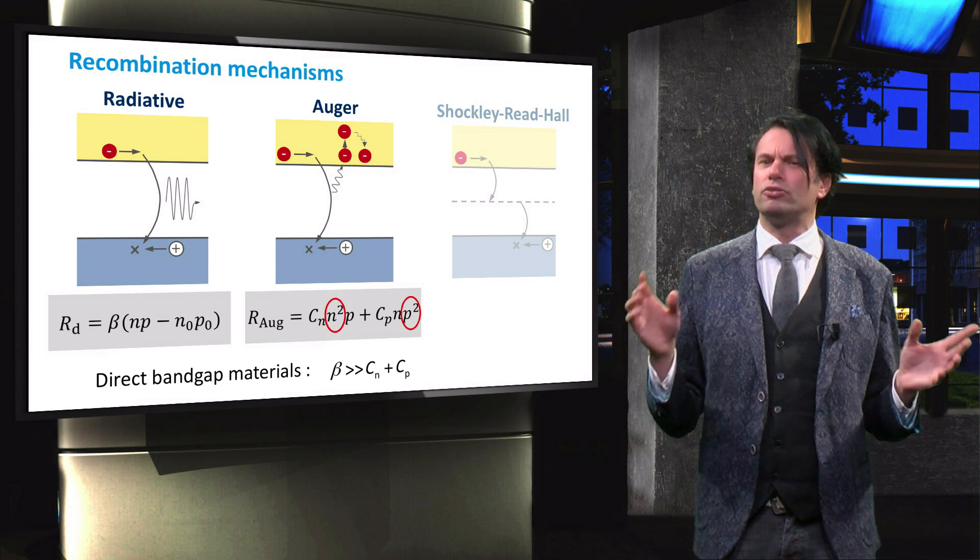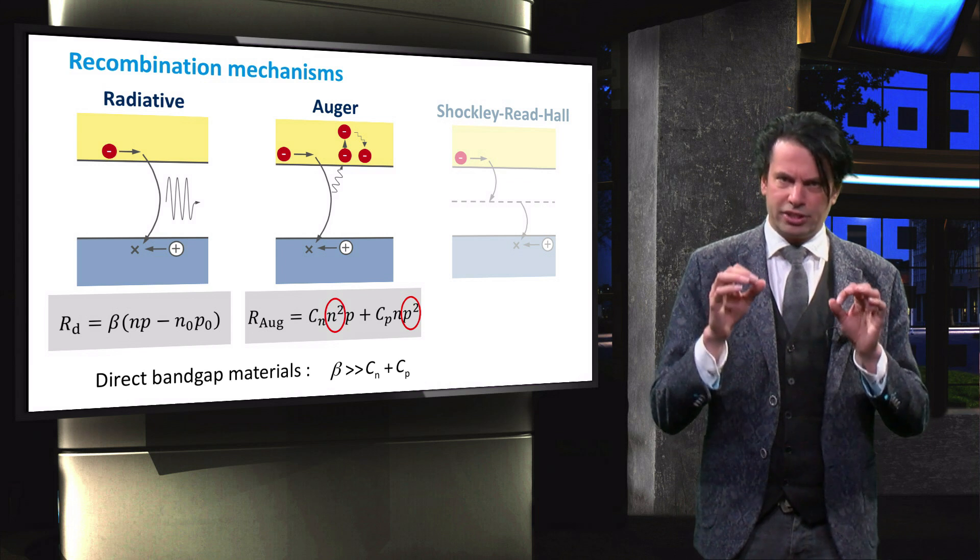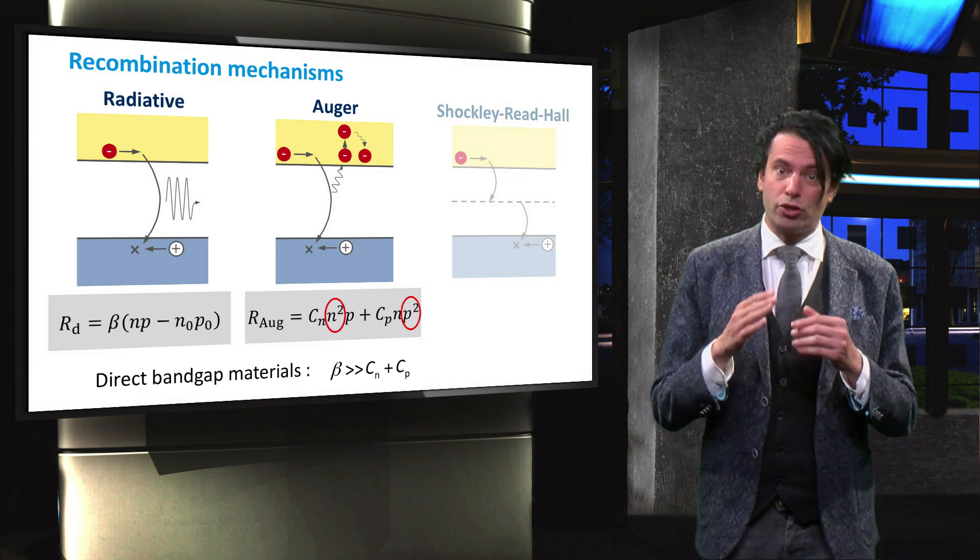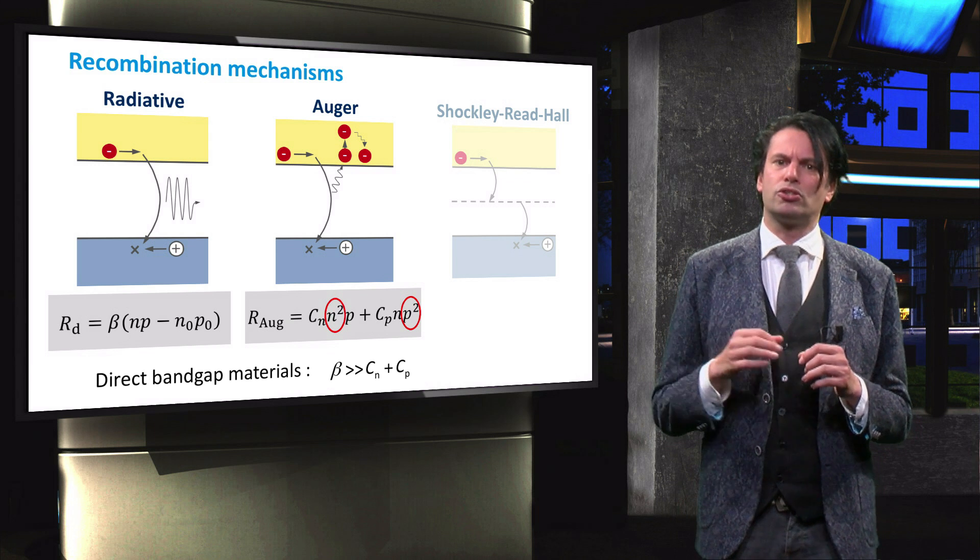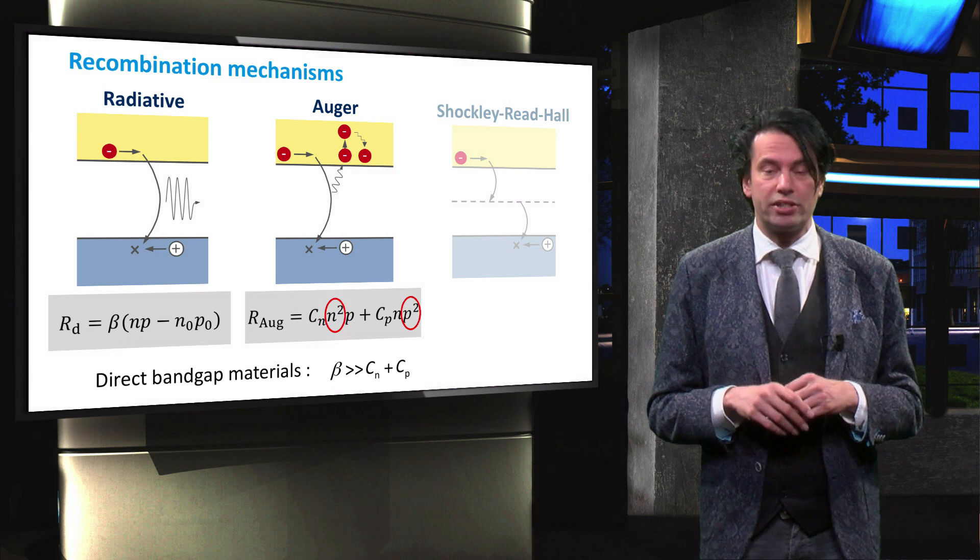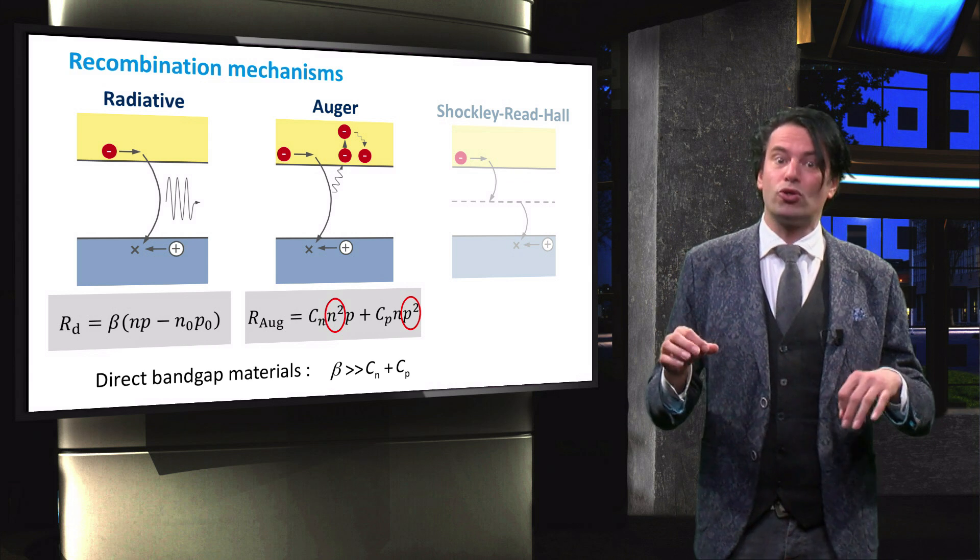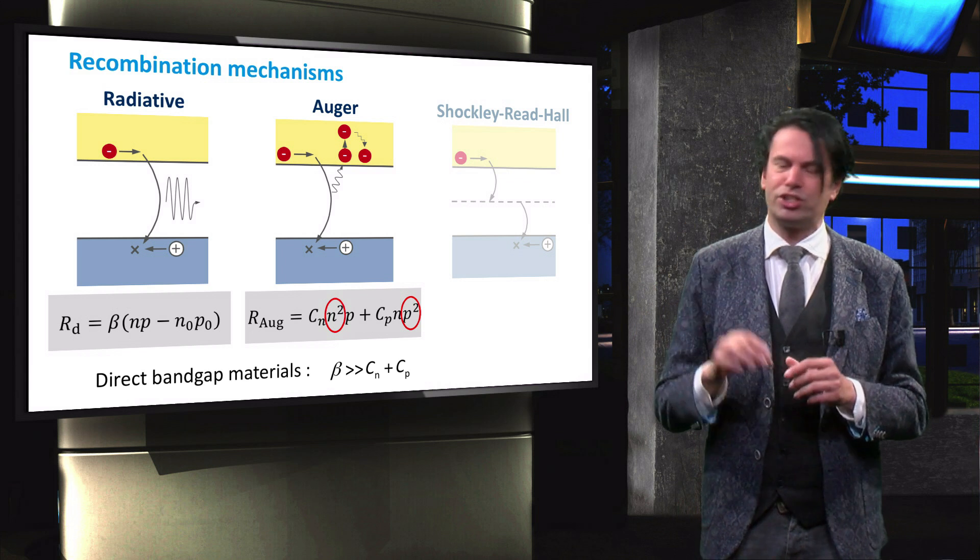Another aspect to be considered is the resistance of the contacts of the solar cell. The resistance losses will scale with the current squared times the resistance. So the resistance losses in the contact busbars and the fingers will go up with the concentration squared as well.